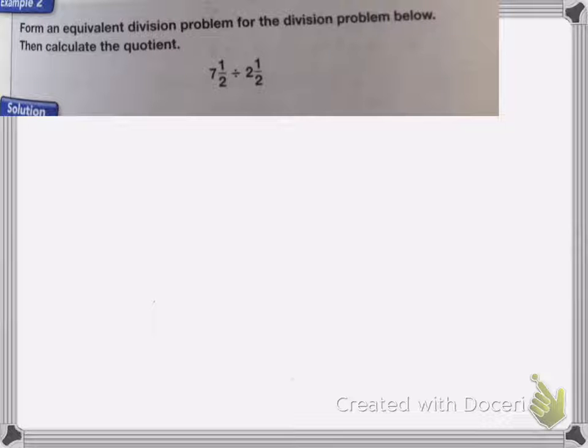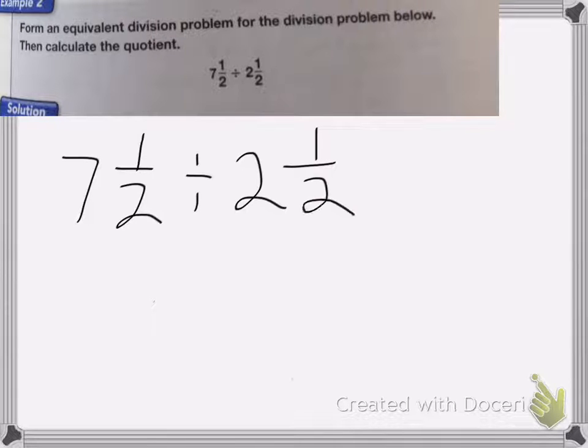On this problem, we have this division problem, 7 and 1 half divided by 2 and 1 half. Now this can be very tricky, so what I'm going to do is multiply both these numbers by 2. Because if I multiply them both by 2, I get rid of my fraction.